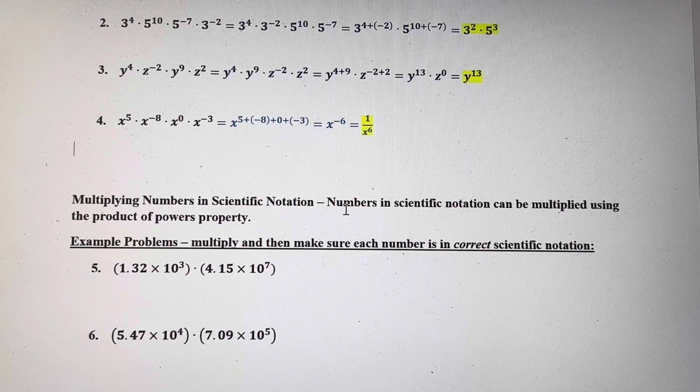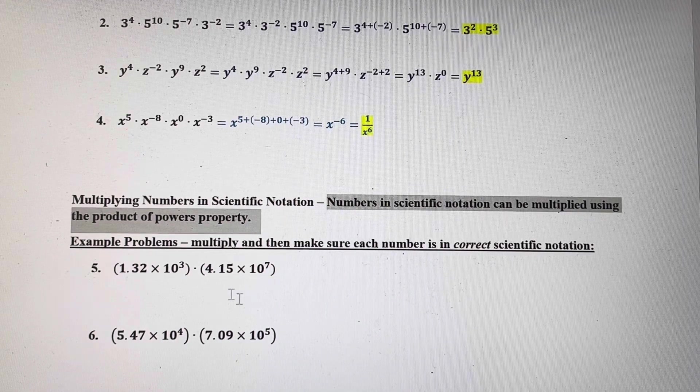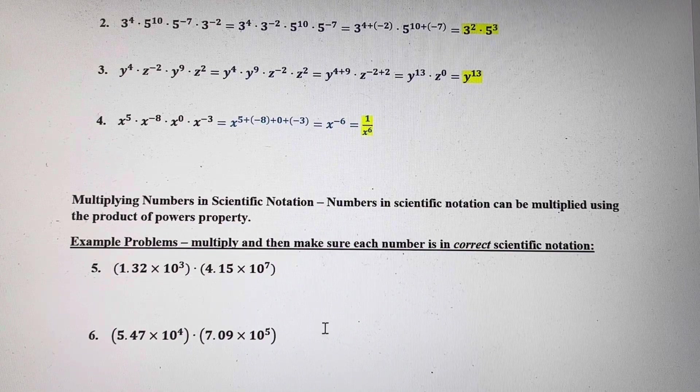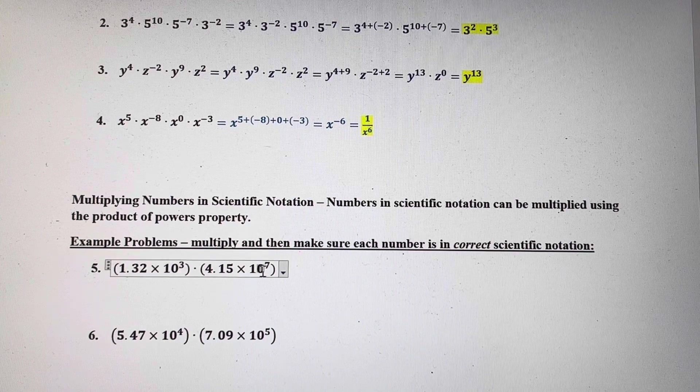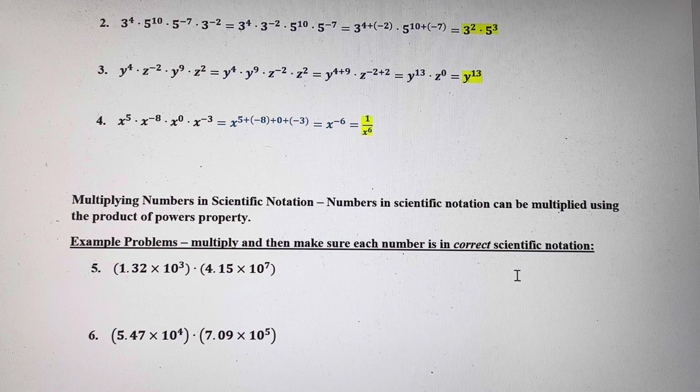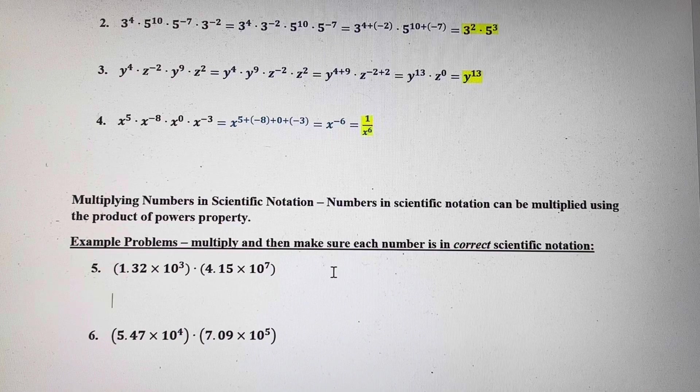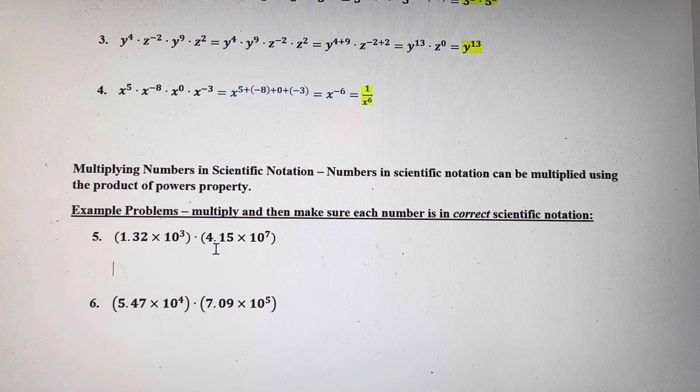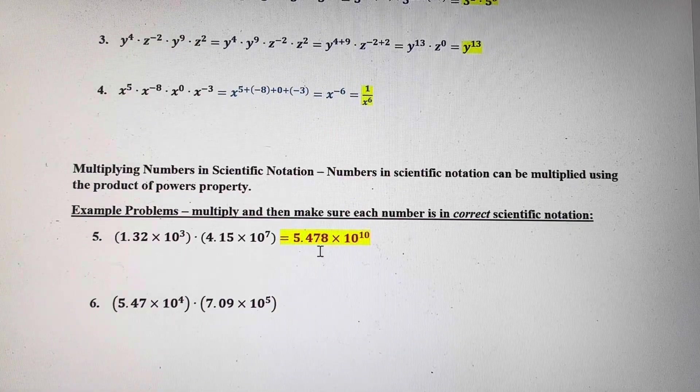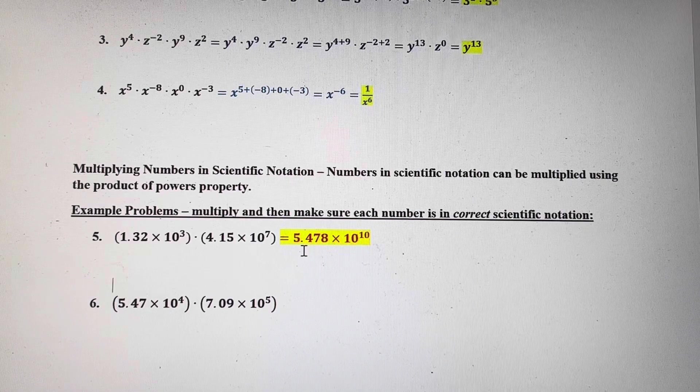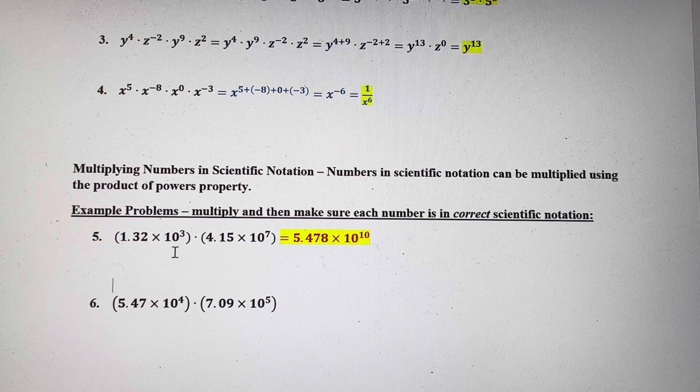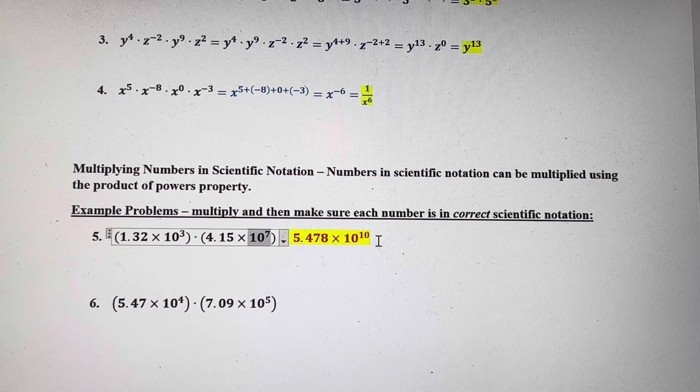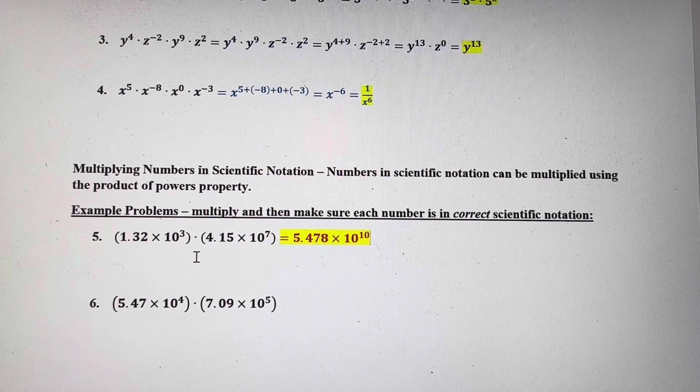Numbers in scientific notation can be multiplied using this product of powers property. So what we're going to do here, we're going to multiply the 1.32 and the 4.15. Those are the constants within those numbers in scientific notation, and then we can multiply the powers together because they have the same base. We want to make sure we're in scientific notation when we're done. So in one of these cases, you will be in scientific notation when you're finished, and the other one you won't. So we're going to have to do an extra step. All right, so number 5. When I multiply 1.32 times 4.15, I get 5.478. So that's good in scientific notation. Remember, our first number has to be greater than or equal to 1 and less than 10. Now, my factors of 10 here, 10 to the 3rd power, 10 to the 7th power, notice I can add those exponents. 3 plus 7 is where that 10 comes from. So this would be the answer for the product of number 5.